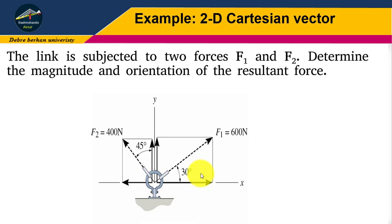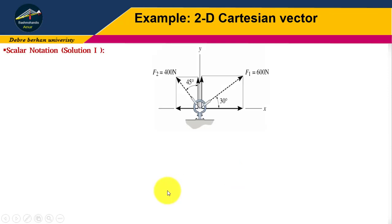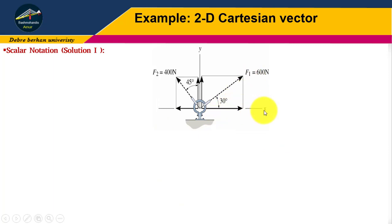Now let us start the solution. Solution one uses scalar notation. We have to calculate Fx and Fy magnitude using scalar notation. F1 is oriented at 30 degrees from the positive x-axis, therefore this force can be resolved into x and y components.